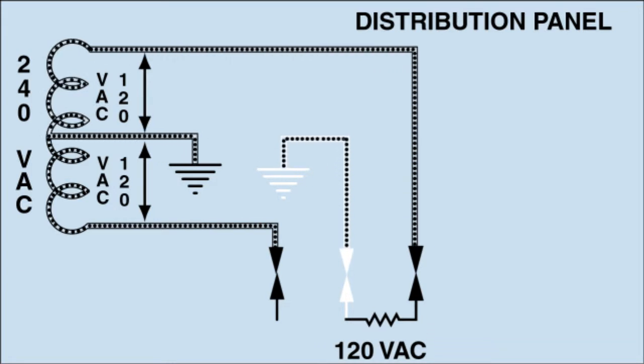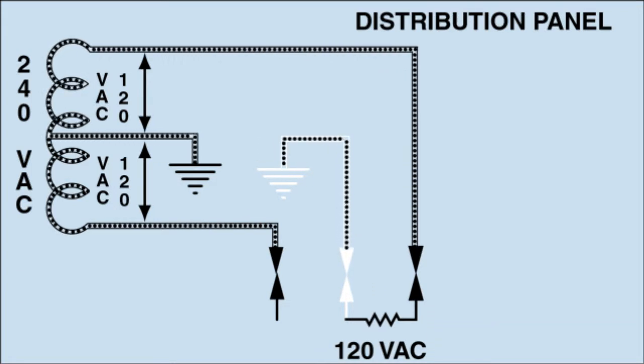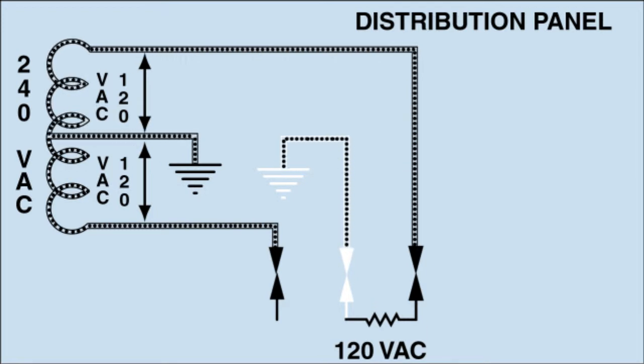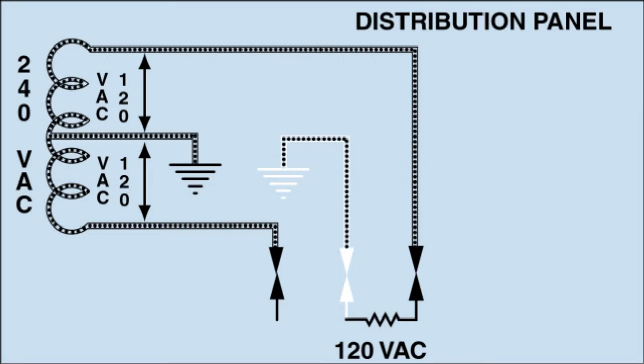If another additional exactly equal 120-volt load were placed on the other bus, then it would be the same as one 240-volt load across the secondary and there would be no current flow in the neutral from the panel to the pole.